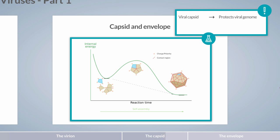At the same time, the energy stored in the order of the system increases, which can act as a driving force for viral uncoating. As capsid subunits are held together by weak, non-covalent bonds, dissociation can be initiated by exposing the capsid to thermal energy. Viral uncoating can also be initiated by mechanical traction or a pH change. However, the trigger releasing the viral genome depends on the virus and the host cell.